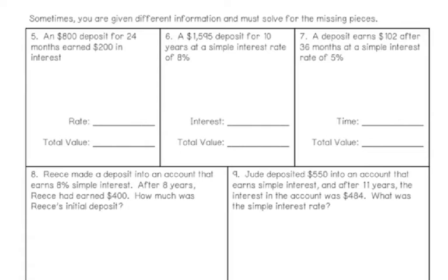Let's look at some other problems together. In these problems, we're going to be given different pieces of information, and we might be solving for a different piece rather than just the simple interest. Regardless, we're going to use the same formula and plug in the pieces of information that we know. The formula is: interest equals principal multiplied by the rate multiplied by the time. I'll look in the problem for the pieces I have and substitute them into the formula.